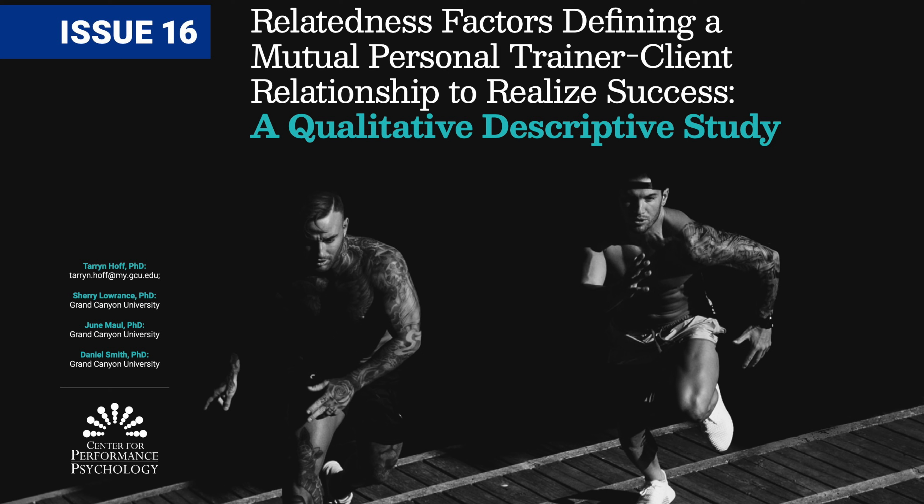The participant elaborates on 'direction': when the trainer set out steps one, two, and three to accomplish a goal, if the participant struggled with step two, the trainer would devise modifications so the step-two goal could still be achieved in a different way. When asked whether choices in the program were an expression of who they really are, the participant says not necessarily — they came to the trainer to reach a goal they couldn't reach on their own.